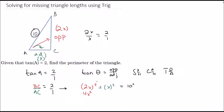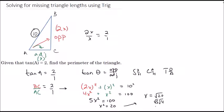(2x)² is 4x², and x² is just x², giving us 5x² = 100. So x² = 20, and x = √20, which simplifies to 2√5.